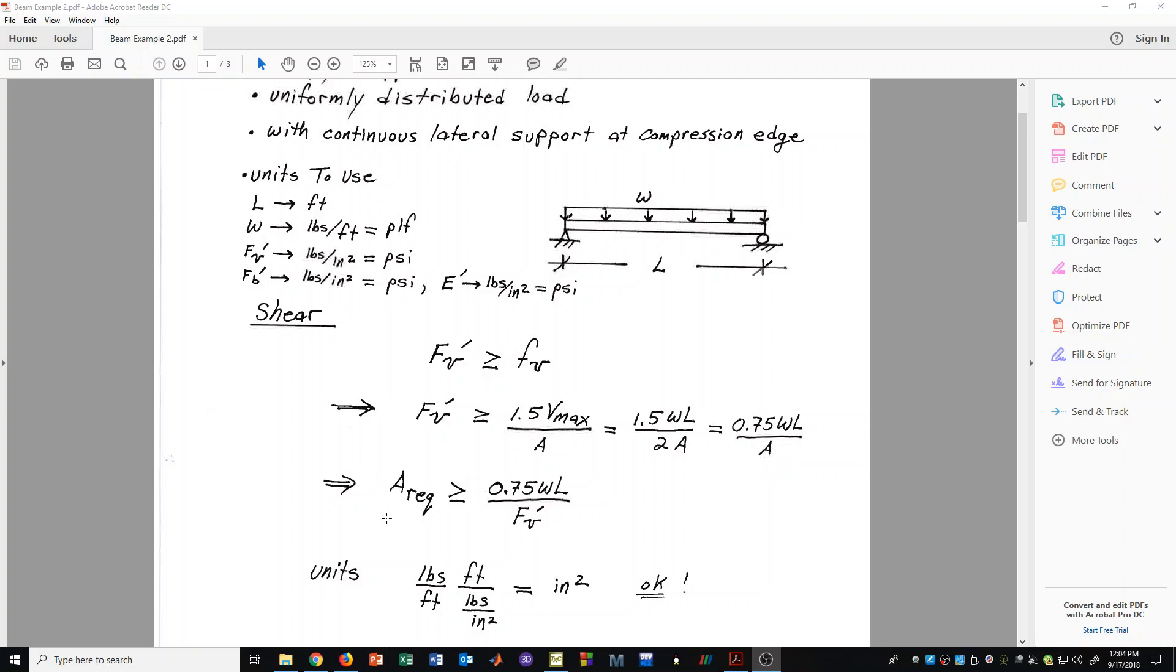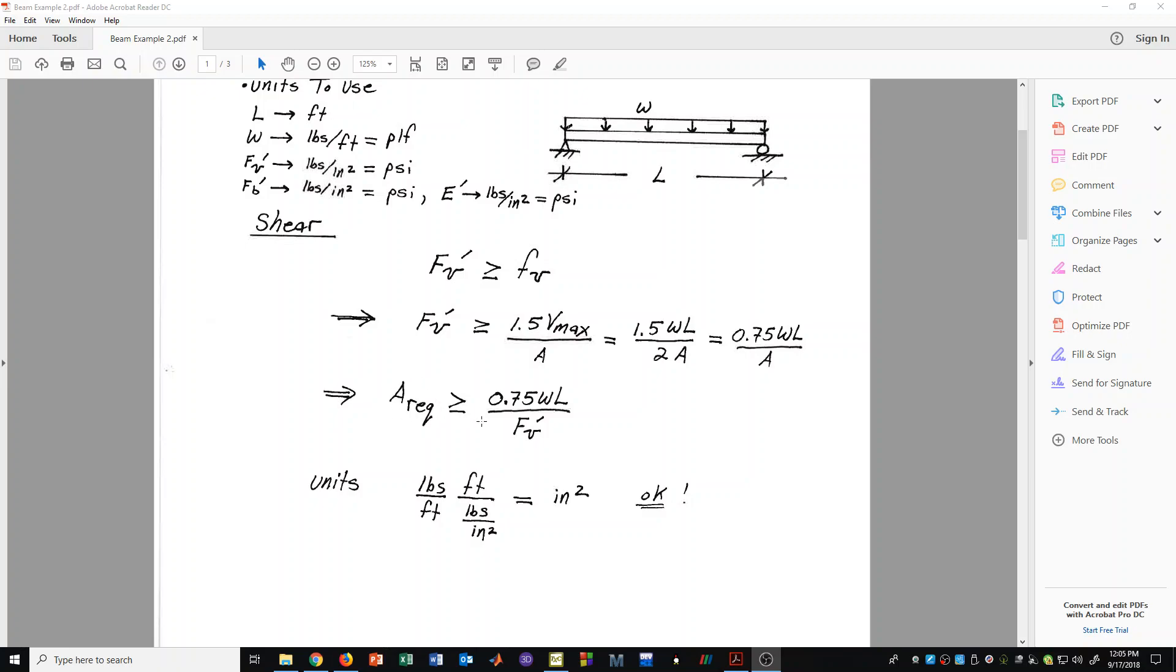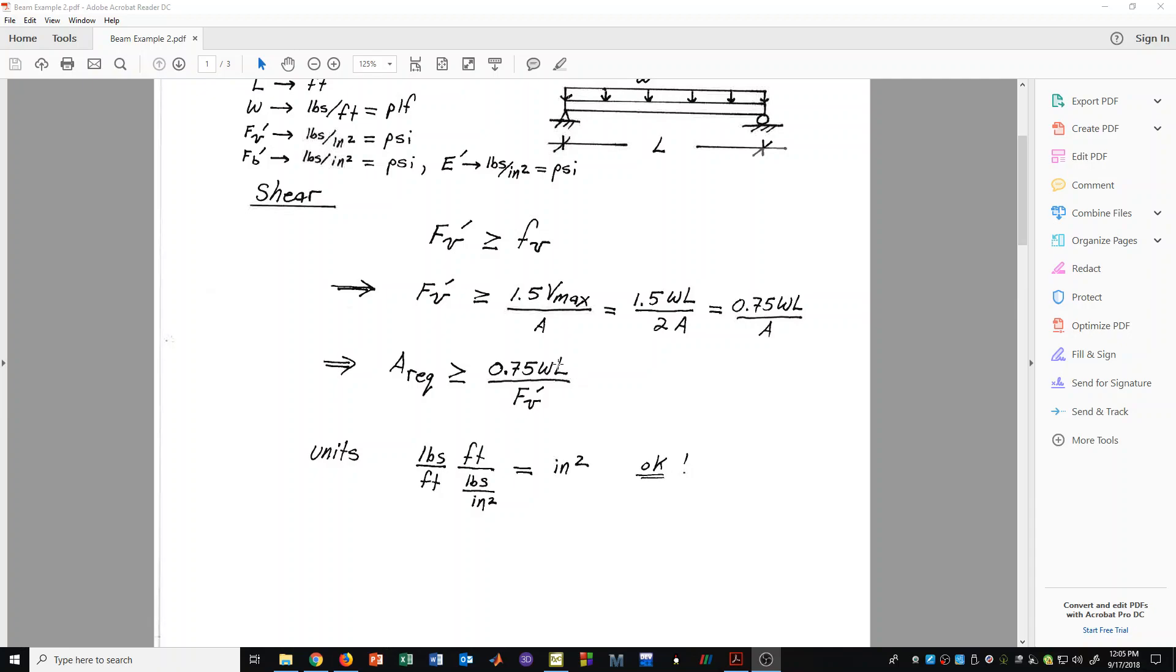Solving for A, we get the cross-sectional area that would be required for that beam in order to satisfy our original ASD formula. A required must be greater than or equal to 0.75 WL over Fv'. It's important for us to check the units of this expression, because we want our answer to come out in units for area of inches squared. We have pounds per foot for W, feet for length, and pounds per inch squared for Fv'. Simplifying this formula, we see that the units that come out are inches squared, and that is exactly what we want.